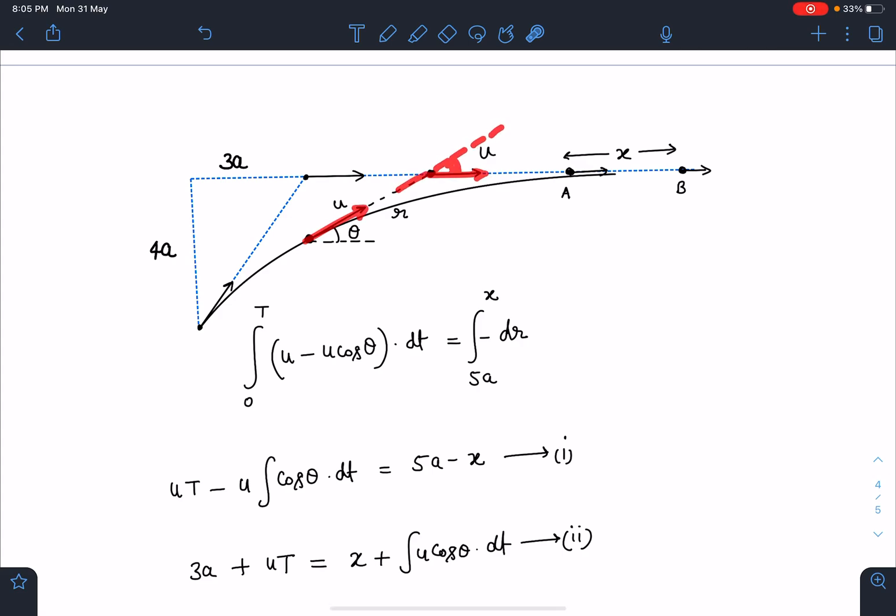This angle I am taking as theta, like we do in the standard chasing problem. So -dr/dt I can write as u minus u*cos(theta), or you can say velocity along the line joining is relative velocity. (u - u*cos(theta))*dt is going to give us relative displacement between these two.